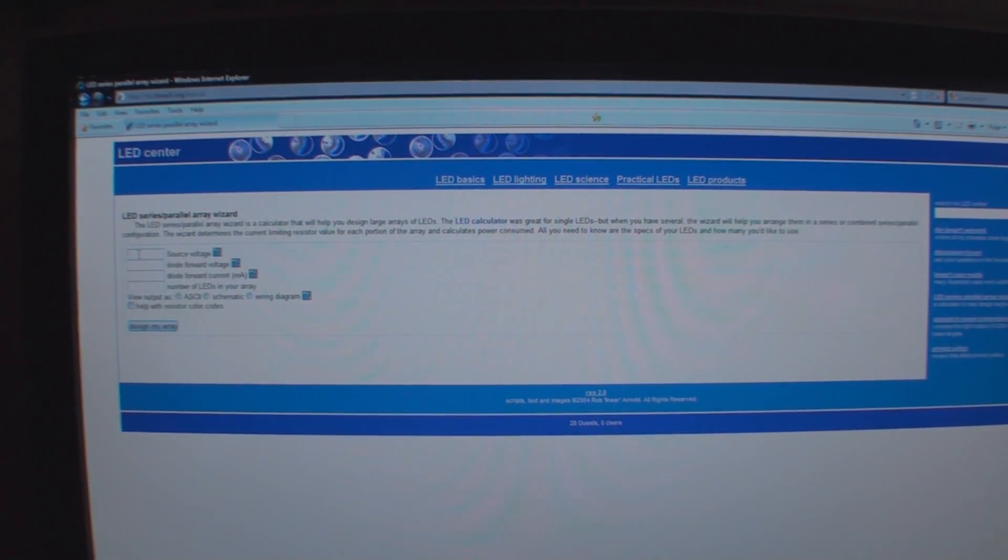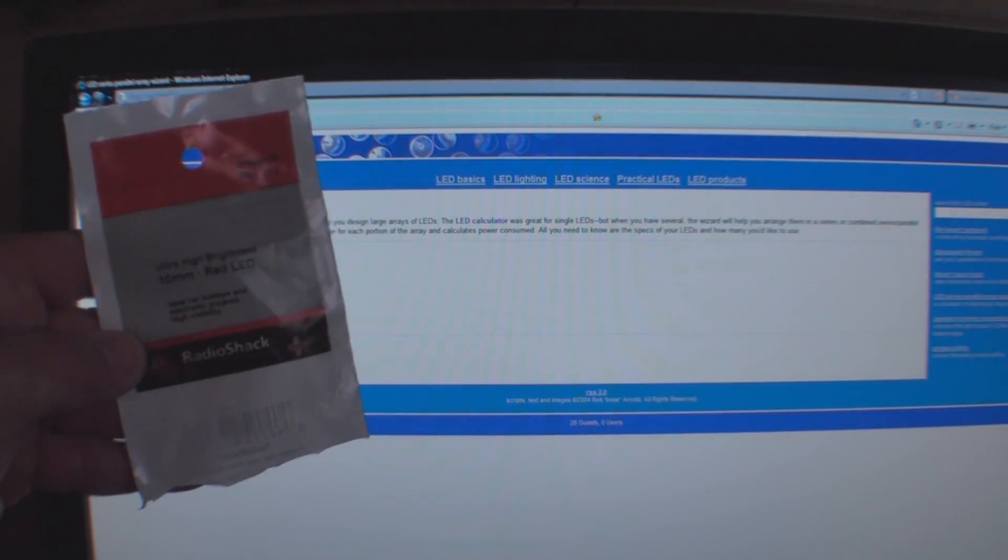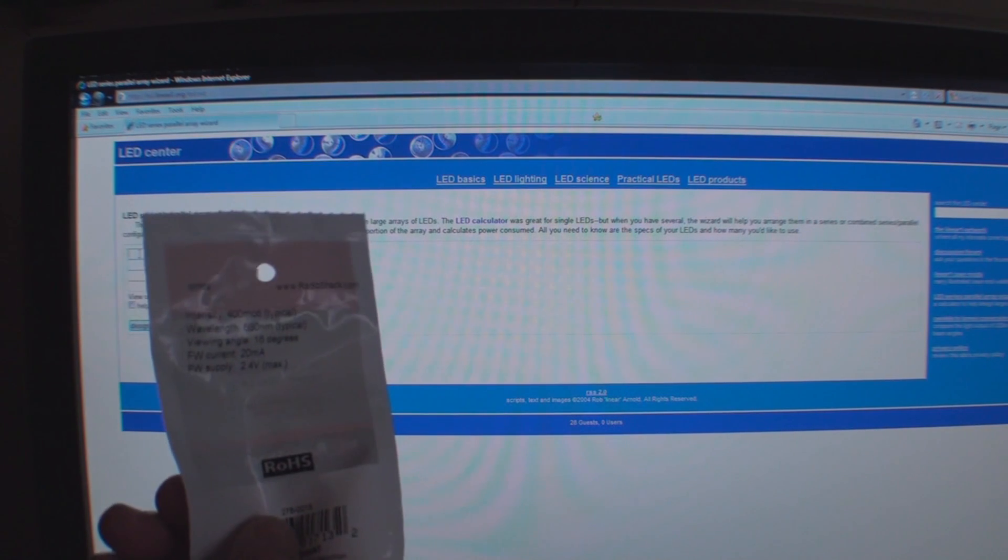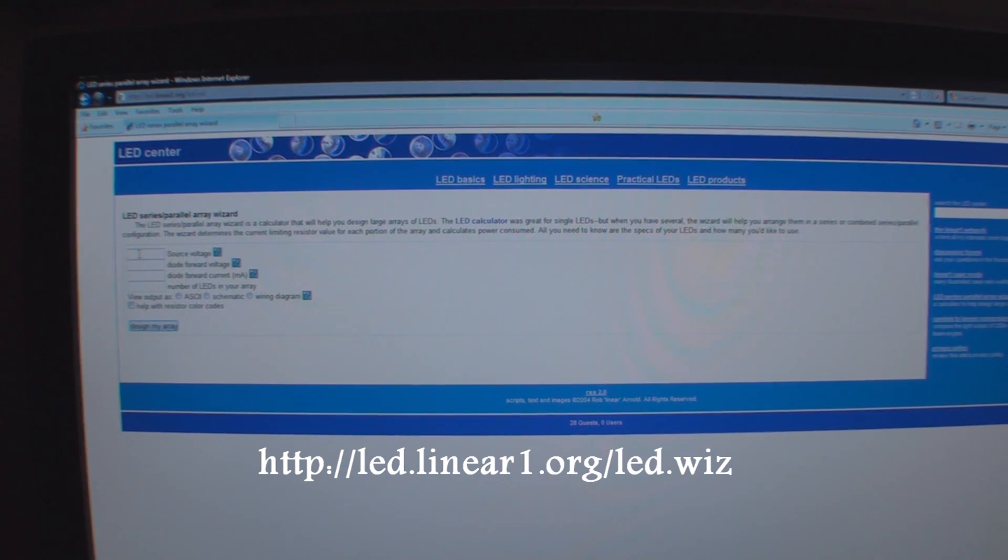So when you're down at Radio Shack, and you find the bulbs that you like, you're going to have to find a resistor to go with it. Remember our 10mm bulbs? Right here, on the back is all the information that you're going to need. Go to this website, it's led.linear1.org, and it has an LED wizard on it.